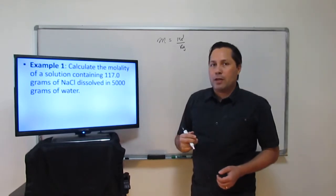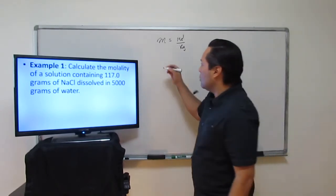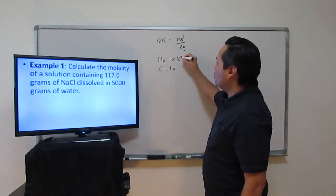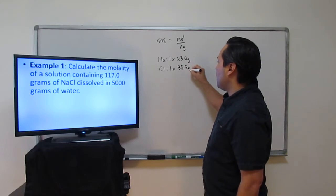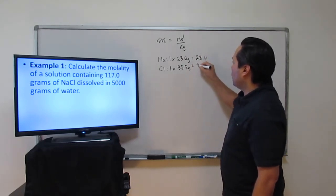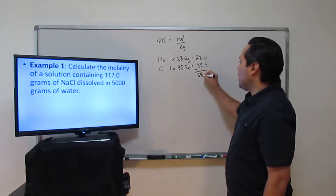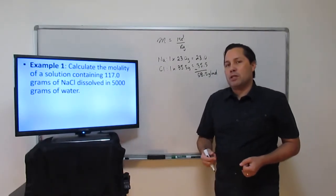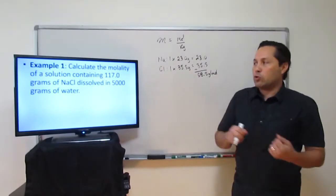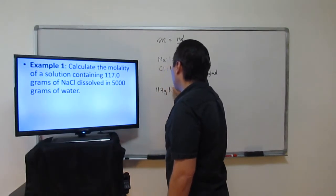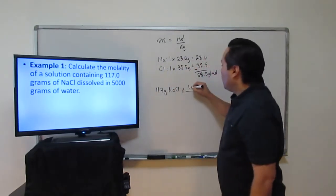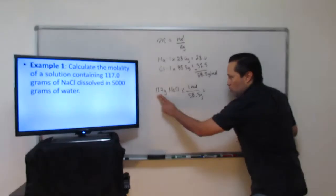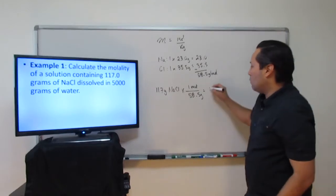Let's begin with the 117 grams of NaCl. We'll need the molar mass of NaCl — there's one Na and one Cl. The molar mass of Na is 23.0 grams and chlorine is 35.5 grams. We add them up and that gives us 58.5 grams per mole — that is the molar mass of NaCl. Next we take our given 117 grams of NaCl and use the molar mass to convert from grams to moles: 117 grams × (1 mole / 58.5 grams), which gives us 2 moles.